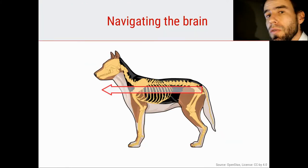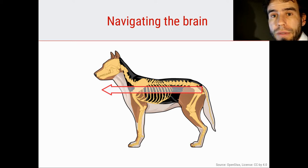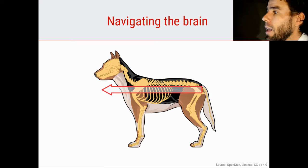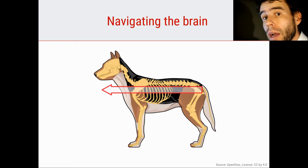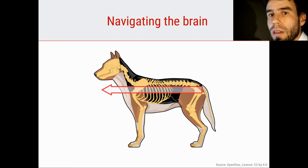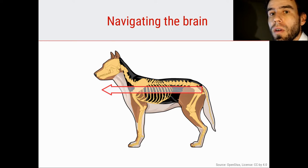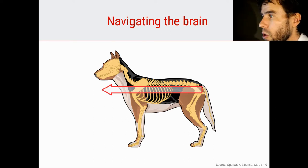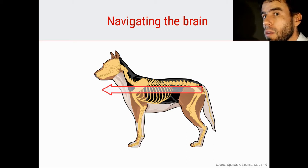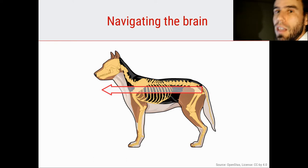In this video, we're going to take a look at the terms that we use to describe where in the brain things are. A very important thing to keep in mind is that the terminology to navigate the brain has been devised with a dog-like architecture of a body — meaning that a dog looks straight ahead, so a dog essentially has a head that points in the direction of the rest of the body.